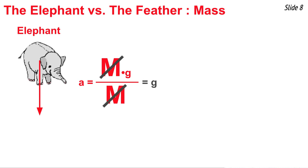and divide it by M. And the M's would cancel out. And we would have an acceleration equal to 9.8 newtons per kilogram, or 9.8 meters per second squared.